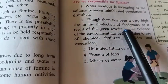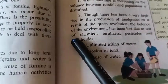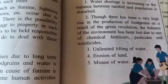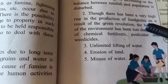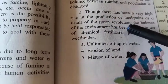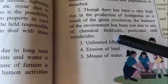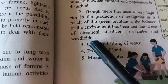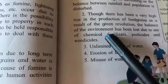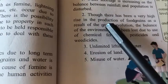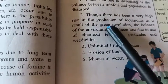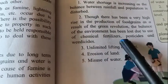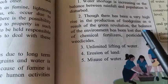Though the green revolution has led to a very high rise in food grain production, the balance of the environment has been lost due to the use of chemical fertilizers, pesticides, and weedicides. To feed the increasing population, farmers use chemical fertilizers, pesticides to protect crops from pests, and weedicides to protect from weeds — all of which create an imbalance in the environment.